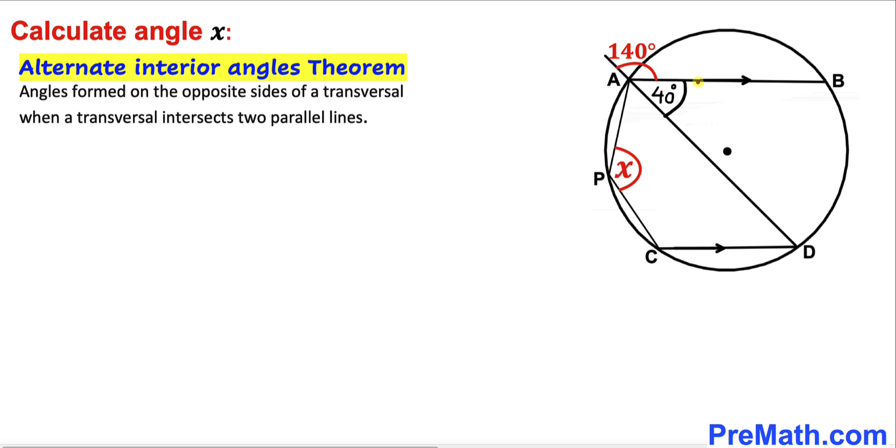Therefore, these two angles are going to be our alternate interior angles, and these angles are always equal. So if this is 40 degrees, this angle has got to be 40 degrees as well.